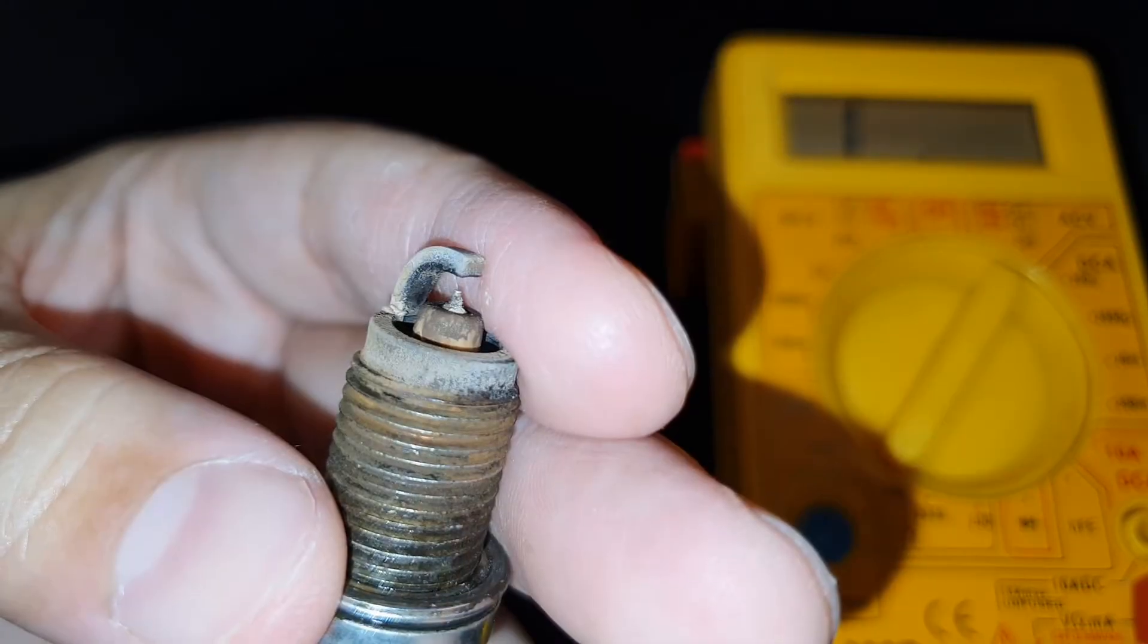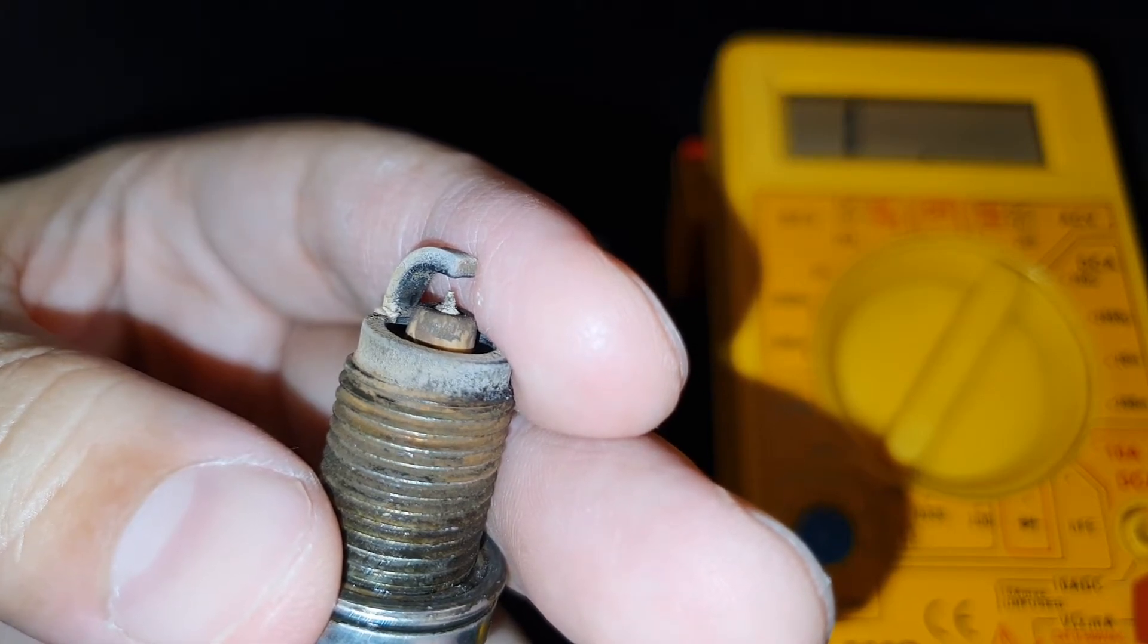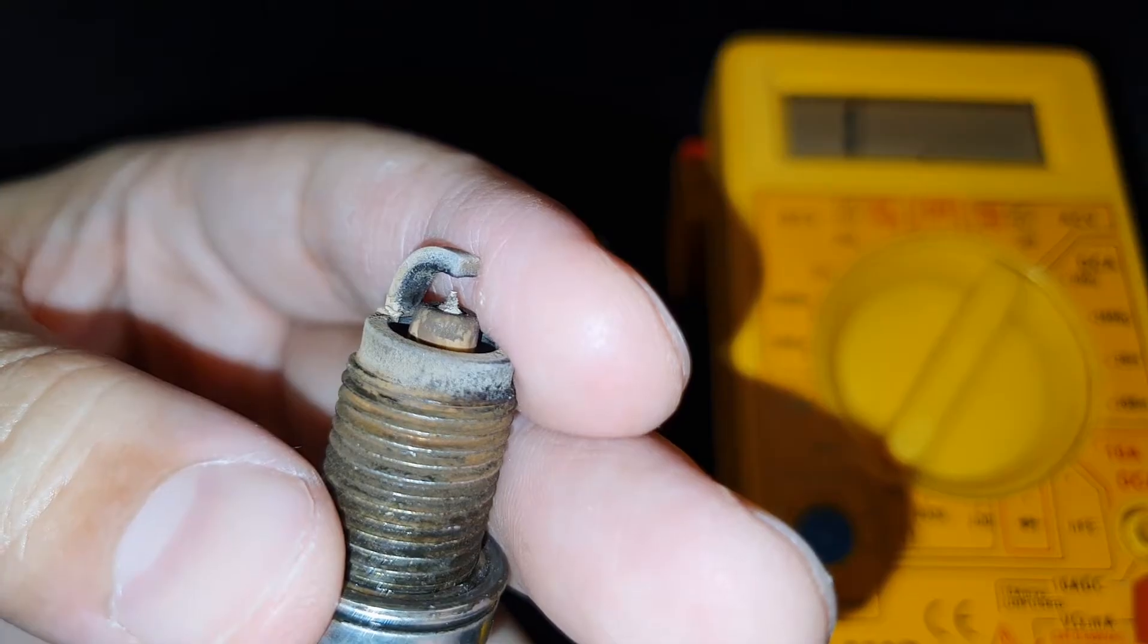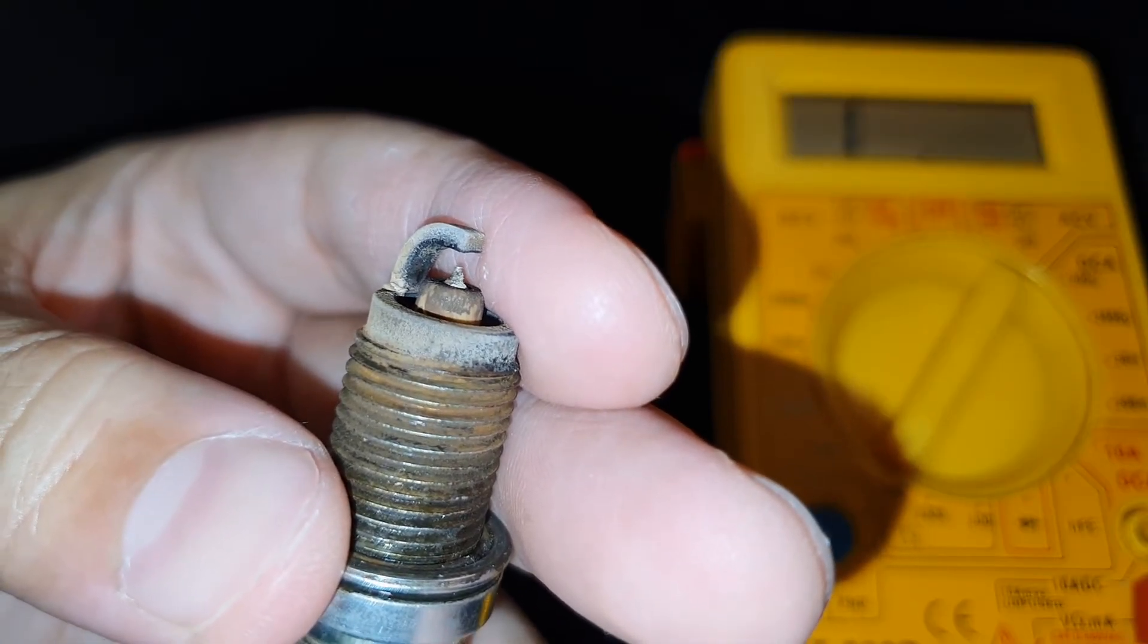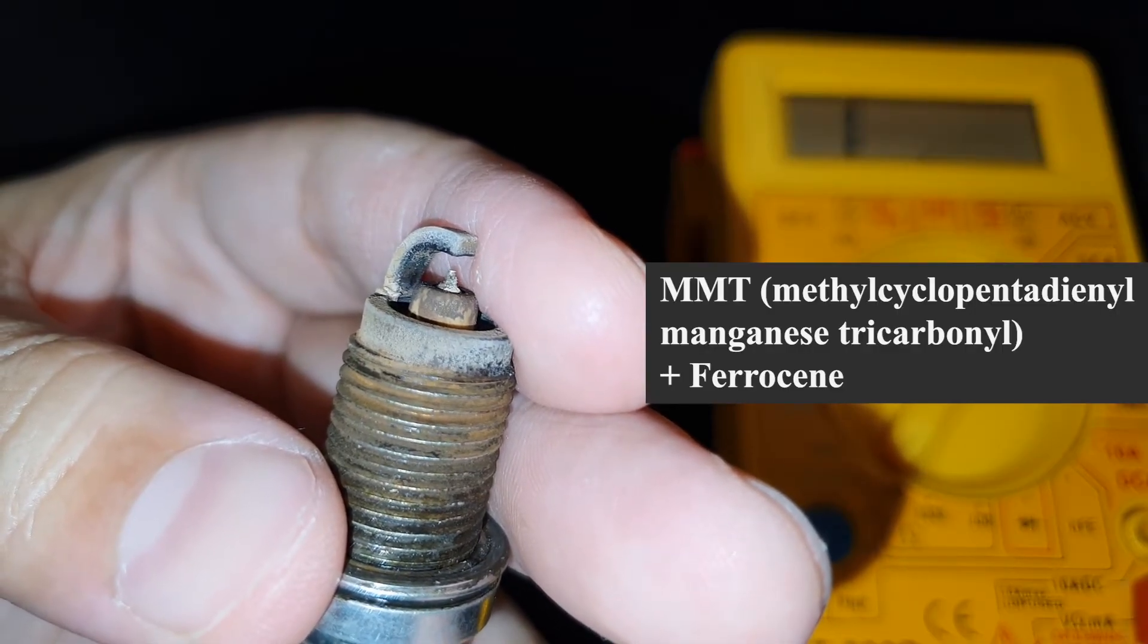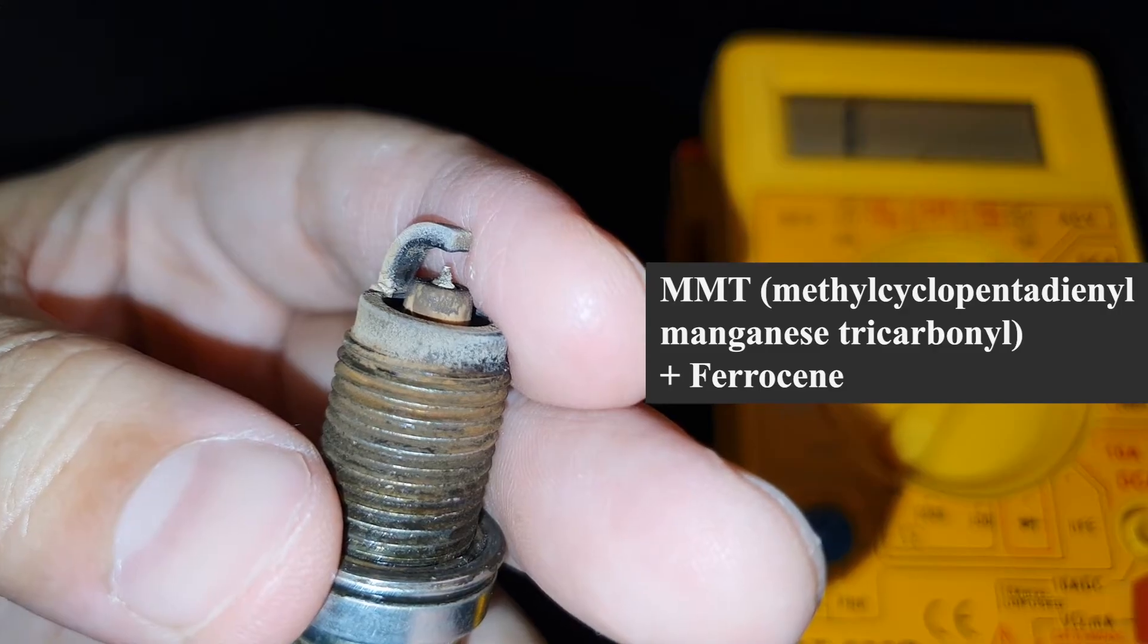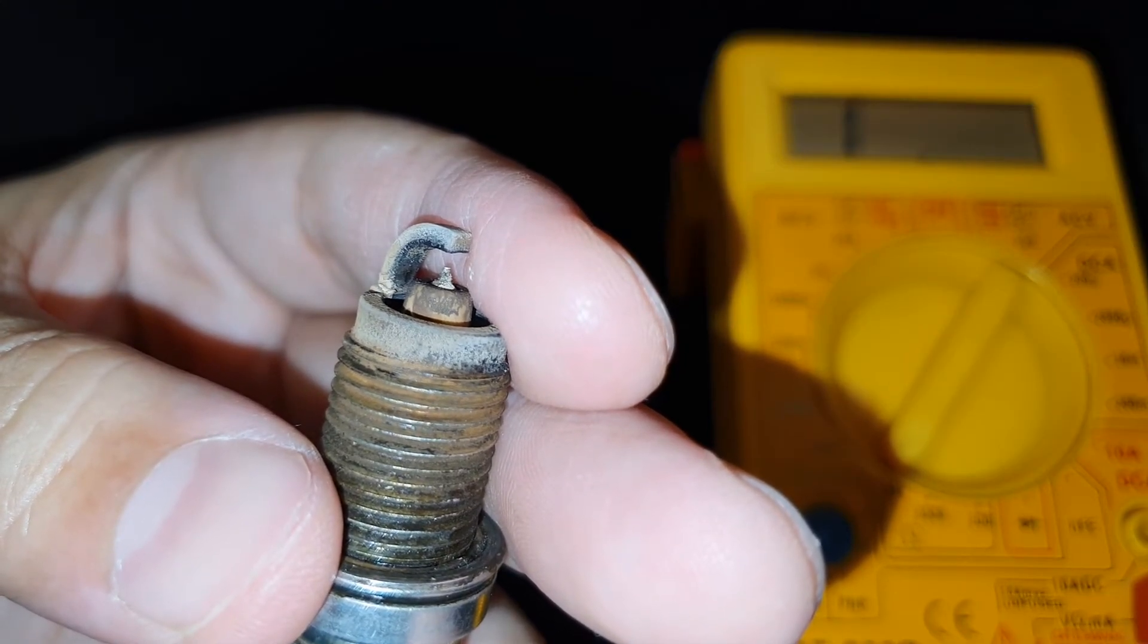As the electrode wears, the gap increases. The resistance level of plugs do go higher. Here those things look fine, but there's fouling. Some years back, we had issues where local refineries were adding MMT and ferrocene additives to fuel that leaves behind manganese and iron oxide deposits that are conductive. This results in lower resistance. Carbon deposits also are conductive, so I believe that is what happened here.